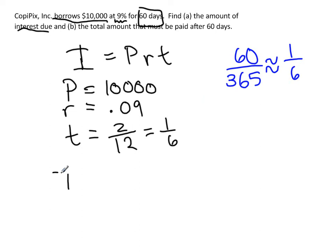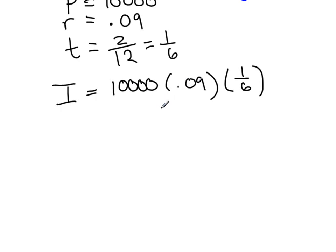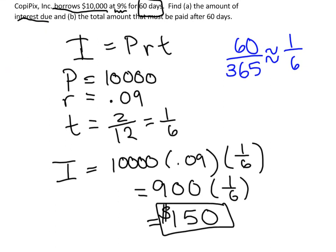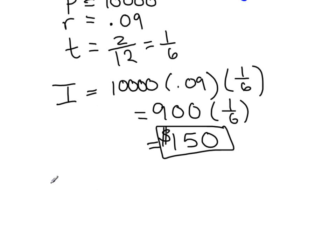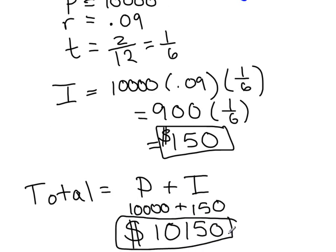Plugging in: I equals 10,000 times 0.09 times one-sixth. First multiply 10,000 times 0.09 to get 900, then multiply 900 times one-sixth to get $150. That is the simple interest owed over 60 days. For the total amount to be repaid, we add the principal back: $10,000 plus $150 equals $10,150. That is the total amount Copie Pics must pay back after 60 days.